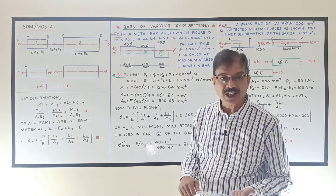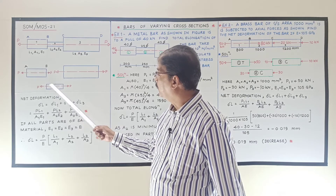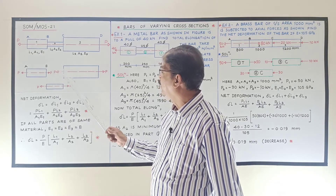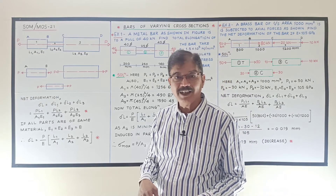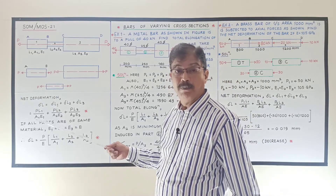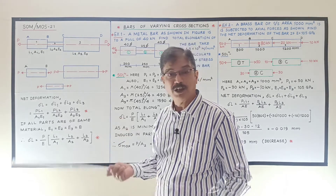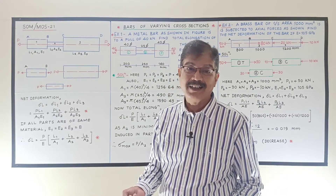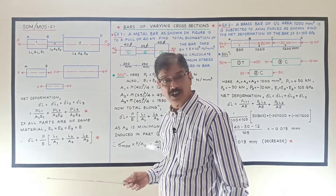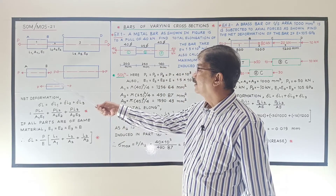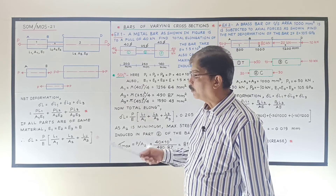Similarly, you can find out the stress induced in each part. Stress in part 1 = P/A1, in part 2 = P/A2, and in part 3 = P/A3. As P is constant, it is clear that for the portion of minimum area, stress will be maximum, and for the portion of maximum area, stress will be minimum, because area is in the denominator. This is how we can find stress and deformation for a bar of varying cross-section. Now let us solve some problems.